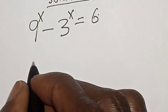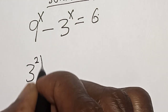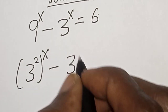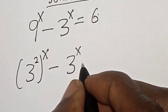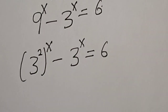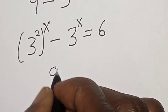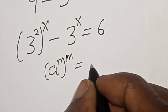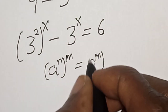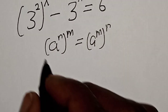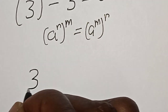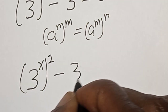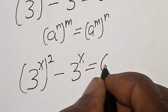9 raised to power s can be written as 3 squared raised to power s, minus 3 raised to power s, is equal to 6. Note that if you have a raised to power n raised to power m, this is equal to a raised to power mn. So now we have 3 raised to power 2s minus 3 raised to power s is equal to 6.